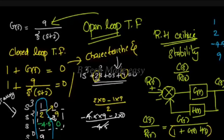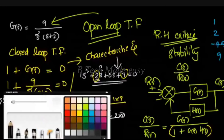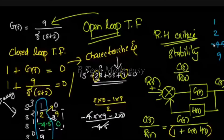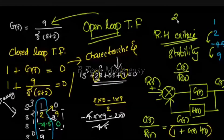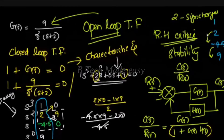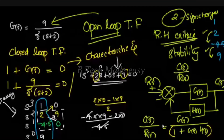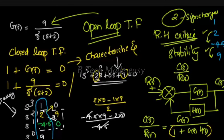Sign changes: positive to positive — no sign change. Positive to negative — one sign change. Again, negative to positive — a second sign change. So there are 2 sign changes in total. If there are 2 sign changes, the number of sign changes indicates the number of roots lying on the right half of the plane.